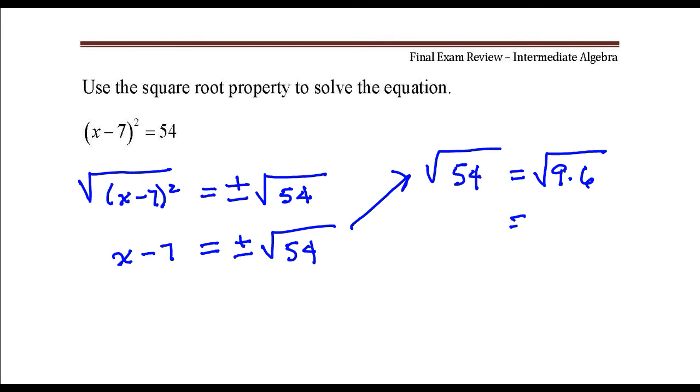So now the square root of 9, that's 3, times the square root of 6. 6 is not a perfect square so we have to leave that under the radical sign. And the last thing I need to do is just add 7 to both sides and I'll have x by itself on one side of the equation.